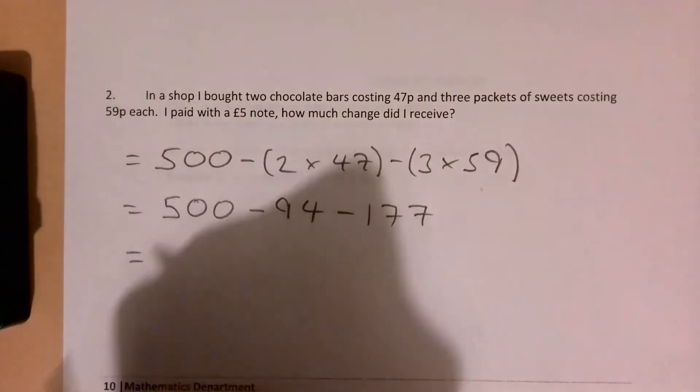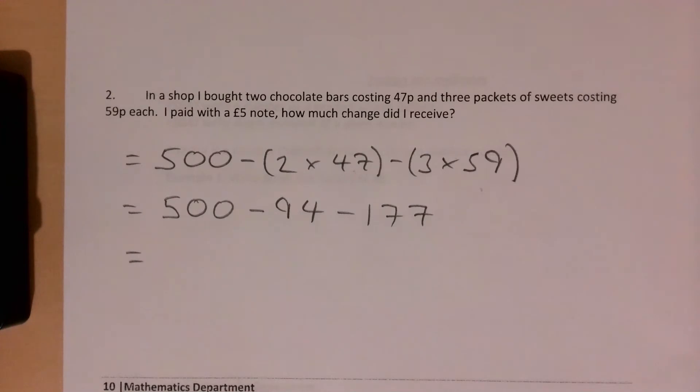So then whenever you do your 500 take away 94, take away 177, you're going to get 229.